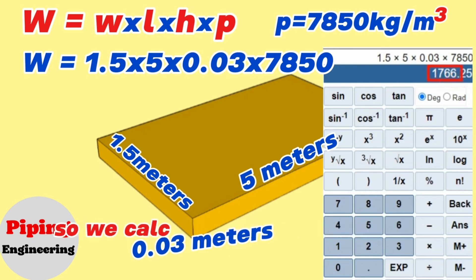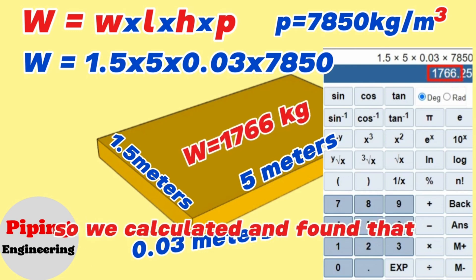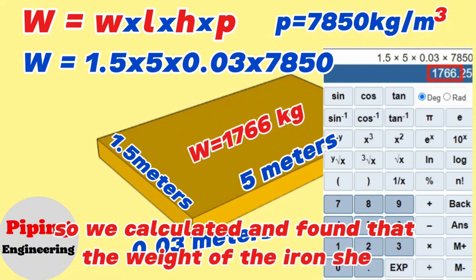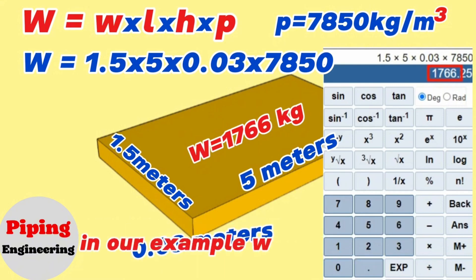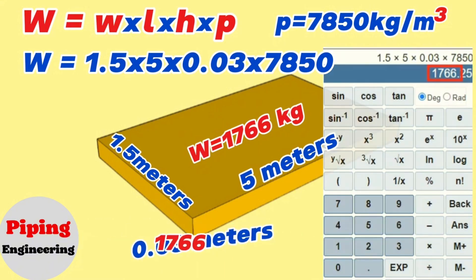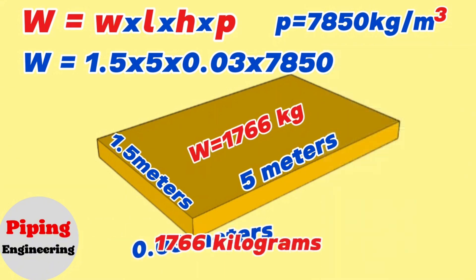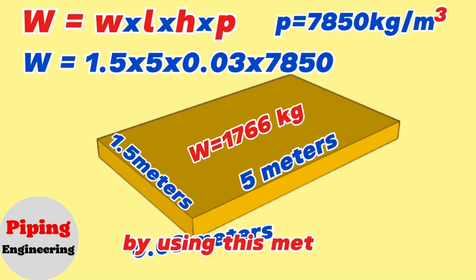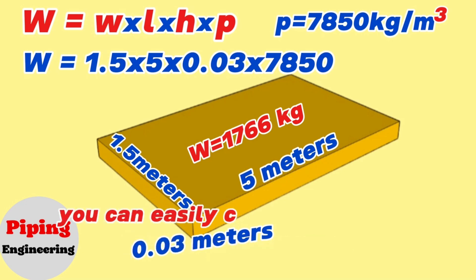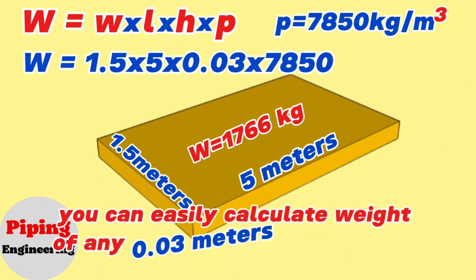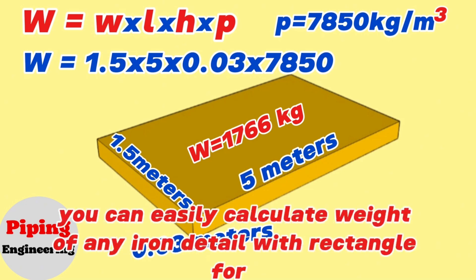So we calculated and found that the weight of the iron sheet in our example equals 1,766 kg. By using this method, you can easily calculate the weight of any iron detail with a rectangle form.